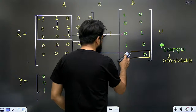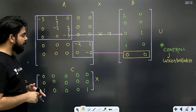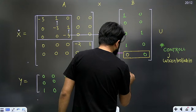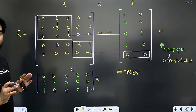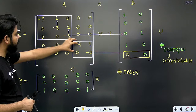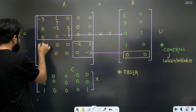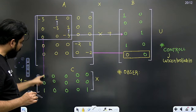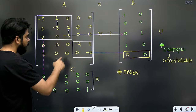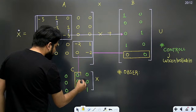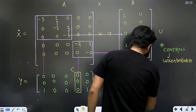समझ गए ना सभी logic? अभी controllability check कर ली, same logic अब observability के लिए भी check करनी है। Same फिर से Jordan blocks के पास जाओ। आप इनके columns को check करना start करो। First column से नीचे आओ - expectation यह है कि सारे elements 0 नहीं होने चाहिए। यहाँ पे सारे elements 0 नहीं थे, यानि यह observable हो सकता है। दूसरे Jordan block के first column पे check किया - यहाँ तो सारे elements 0 हो गए। अगर सारे elements 0 हों, तो यह category में चला जाएगा unobservable।